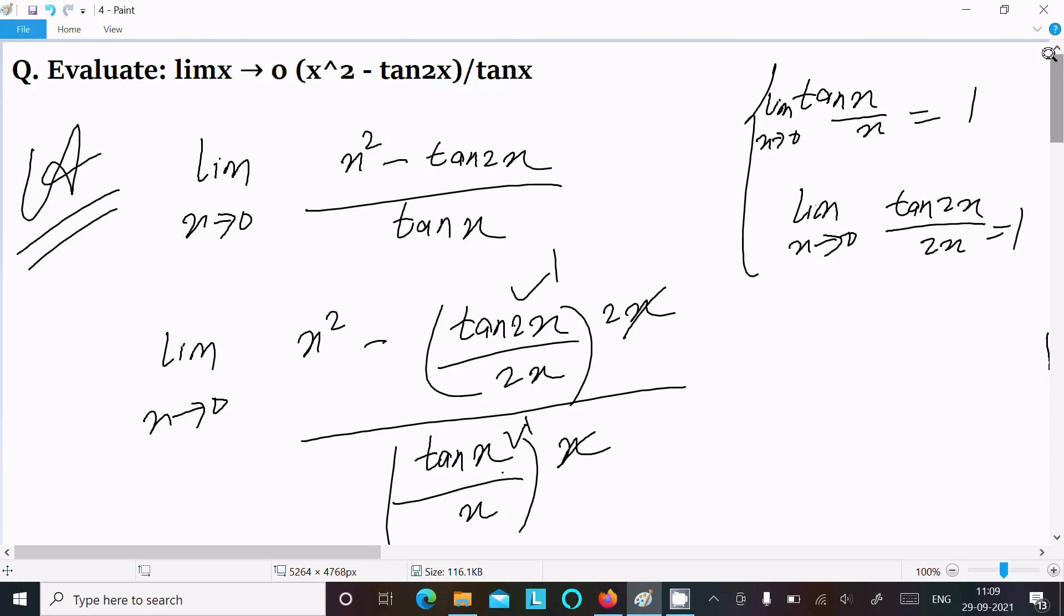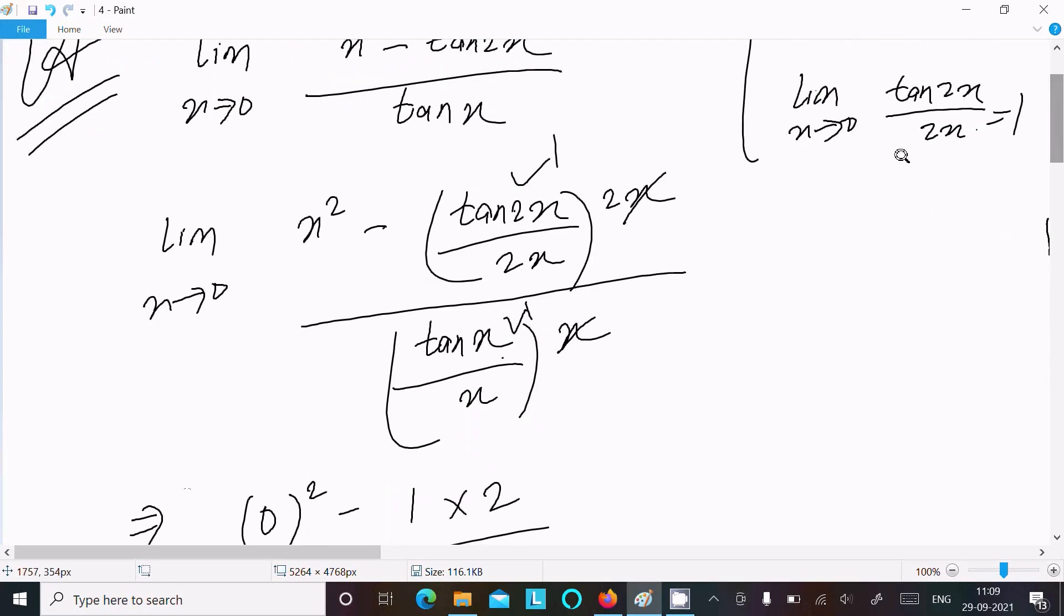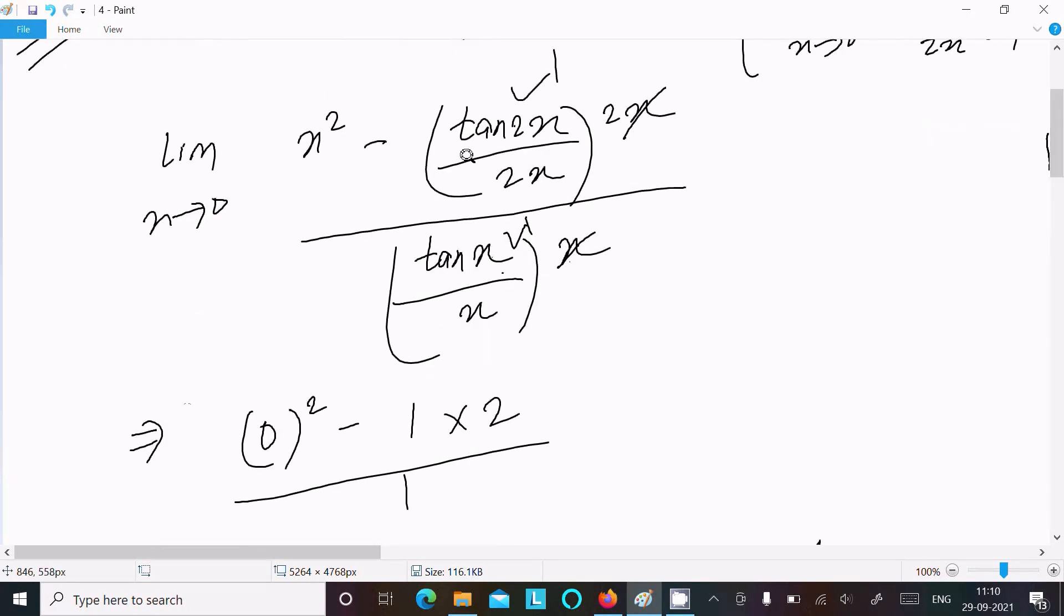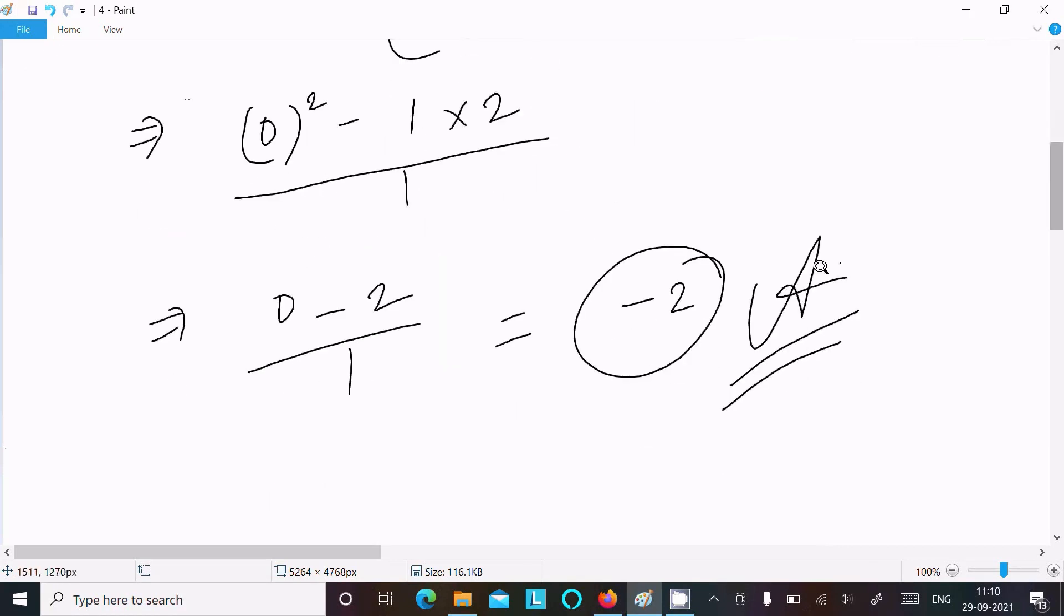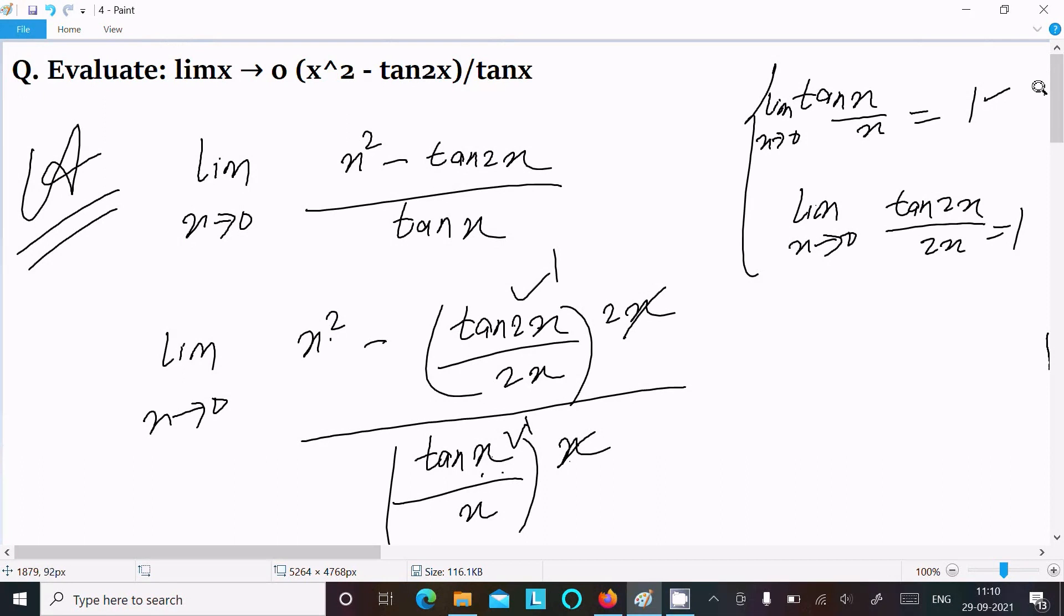One more time repeating: we have the formula limit x tends to 0, tanx by x equals 1. Here, x squared minus tan2x by 2x, denominator divided by 2x, so numerator multiplied with 2x. This x and x cancel. Now you get x squared minus tan2x by 2x equals 1, this returns 1. So as x tends to 0, 0 squared and this value returns 1, 1 into 2, divided by 1, minus 2 is the answer.